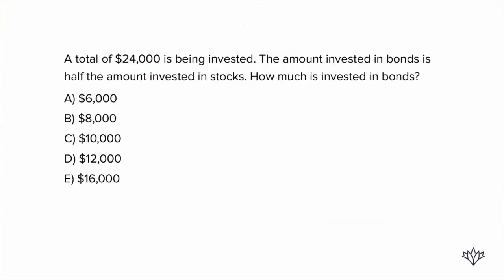Alright, so this is one of those questions that you can actually use the answer choices to get it right. It's a little bit of a complicated word problem and you can use those answer choices. So it tells us a total of $24,000 is being invested. The amount invested in bonds is half the amount invested in stocks. How much is invested in bonds?